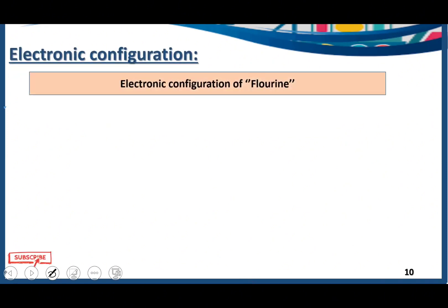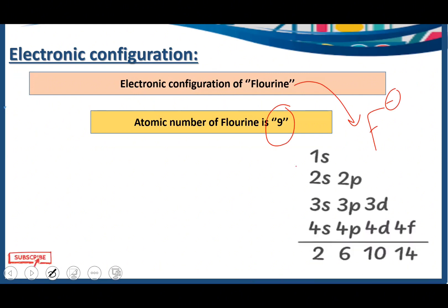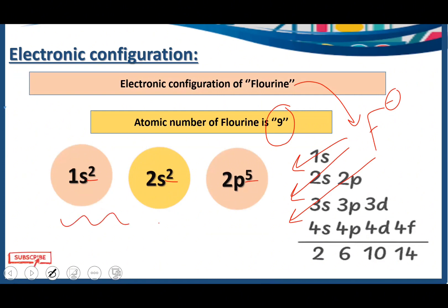Electronic configuration of fluorine — atomic number 9. Fluorine is the most highly reactive element in the periodic table. We write 1s2, 2s2, and this time 2p5. Counting the electrons: 2+2=4, 4+5=9. So the electronic configuration of fluorine is 1s2, 2s2, 2p5.